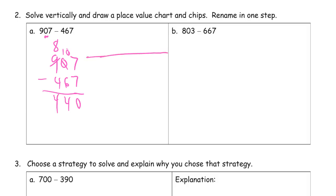And draw this with the chip model. 100s, 10s, ones. 900. So now I need to decompose 100. And now I can subtract 7 ones, 0 left. I can subtract 6 tens, 4 left. And I can subtract 4 hundreds, 4 hundreds left.